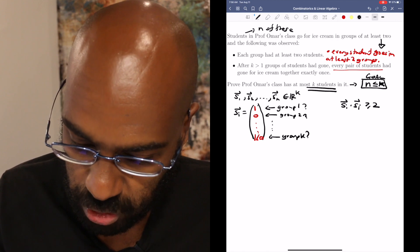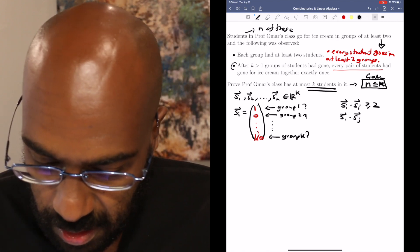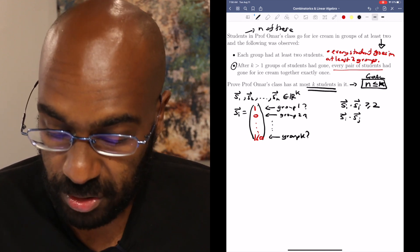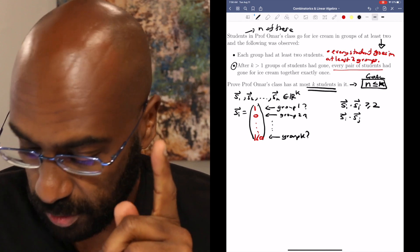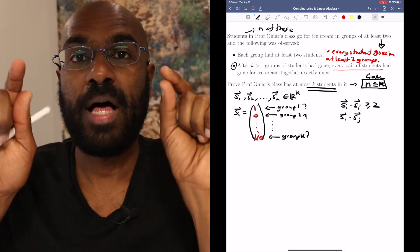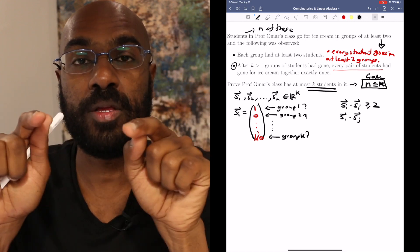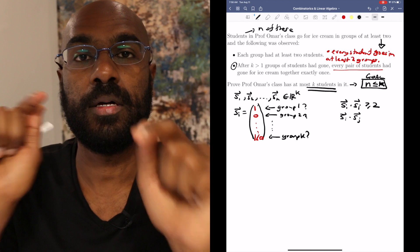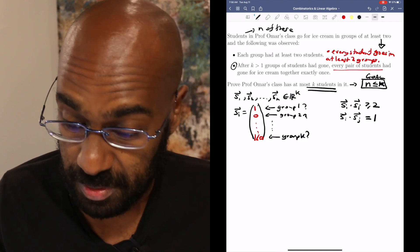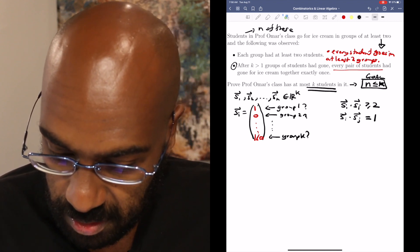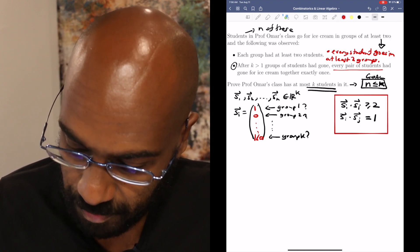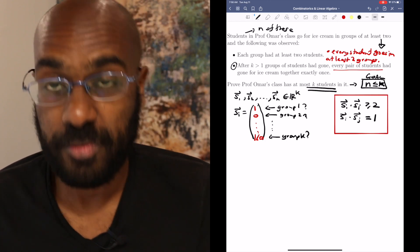Okay, and then if i is not equal to j, then the information we're given in this second bullet is that every pair of students had gone for ice cream exactly once, right? So when we look at the vector corresponding with si and sj, they'll have a one together in exactly one of the positions. Otherwise one of them is going to have a zero in a given position. So the dot product between these two actually has to be exactly one. And so this is the sort of linear algebraic information we have about these vectors. We're going to keep these here and use them for our various proofs.